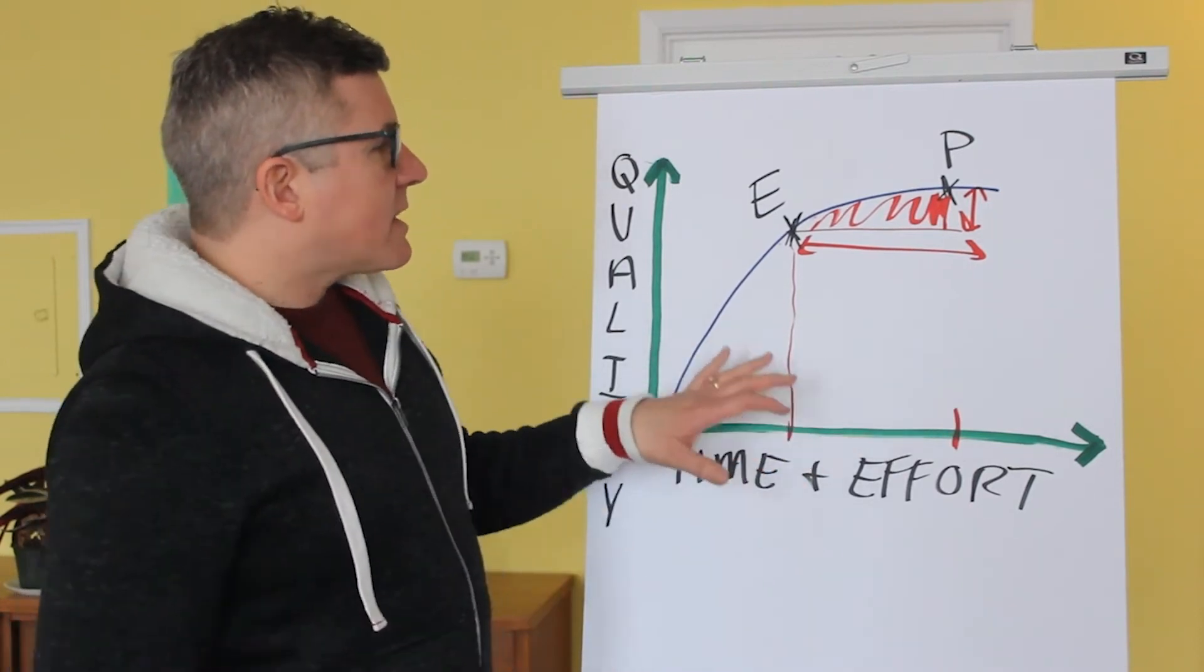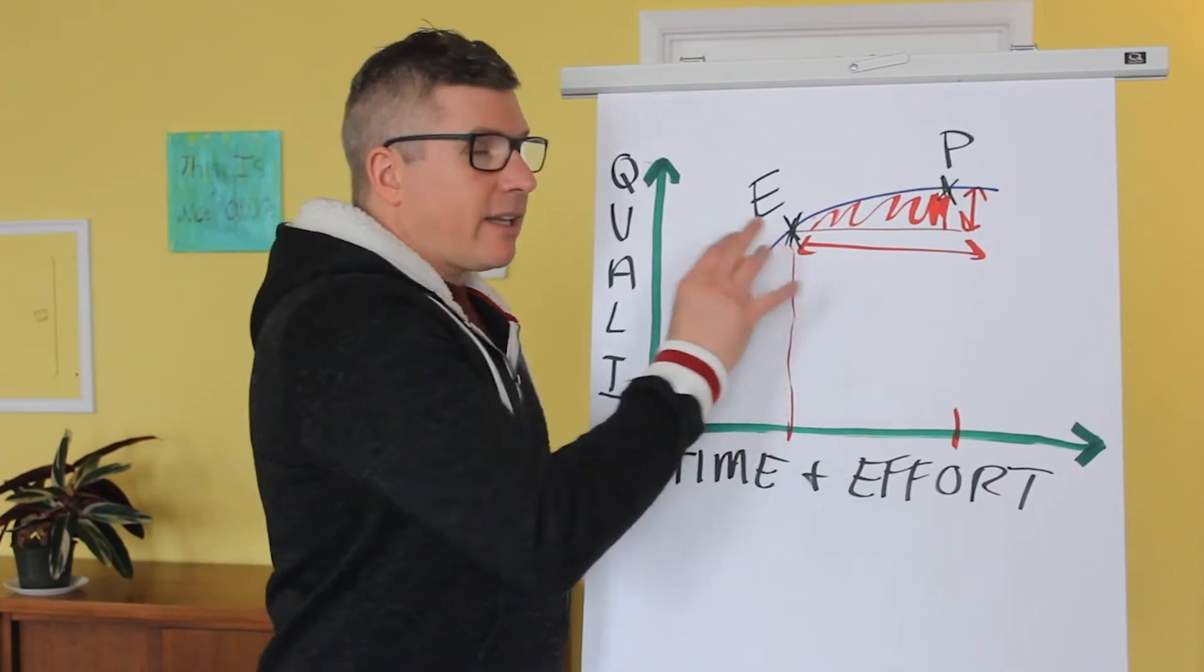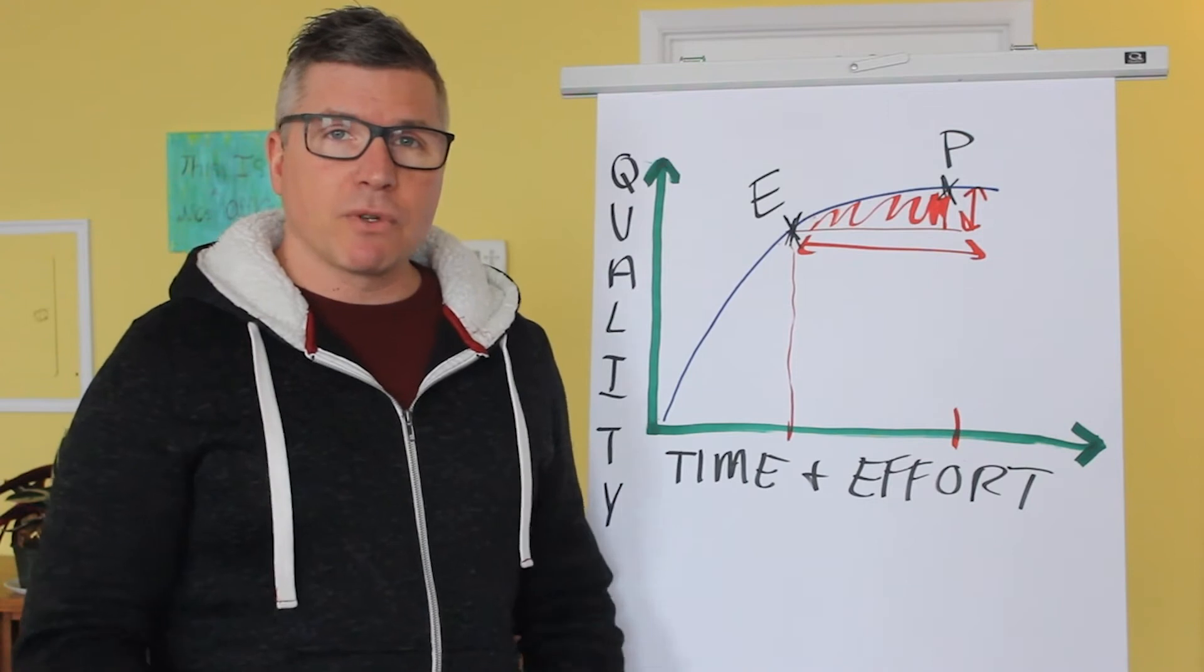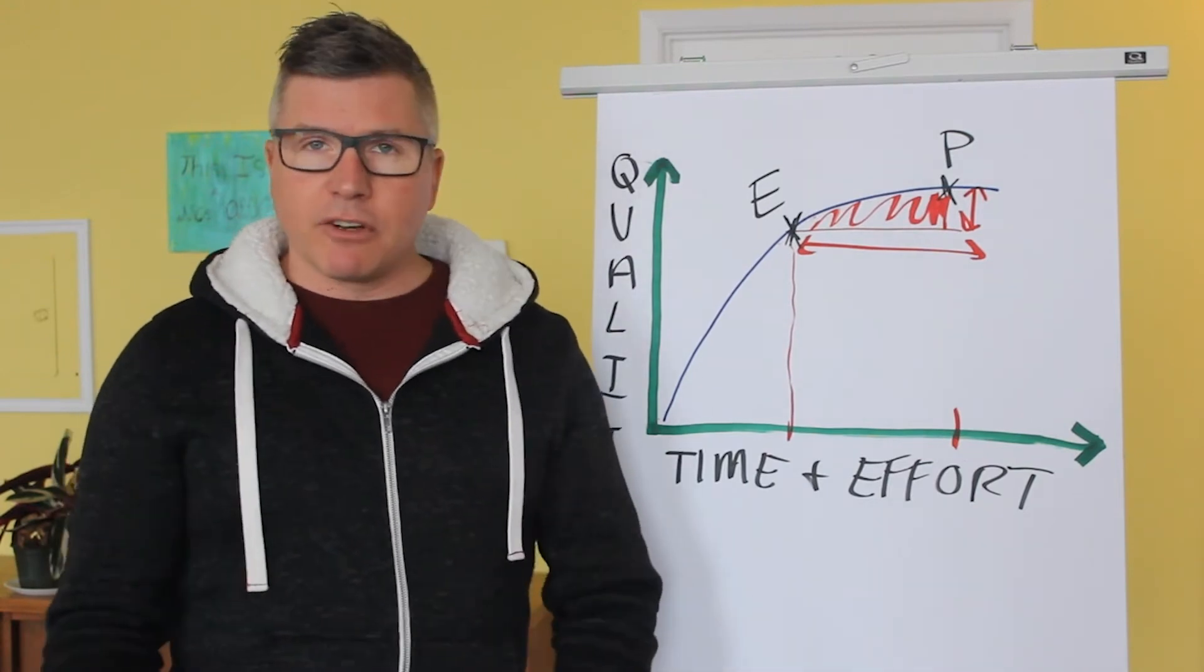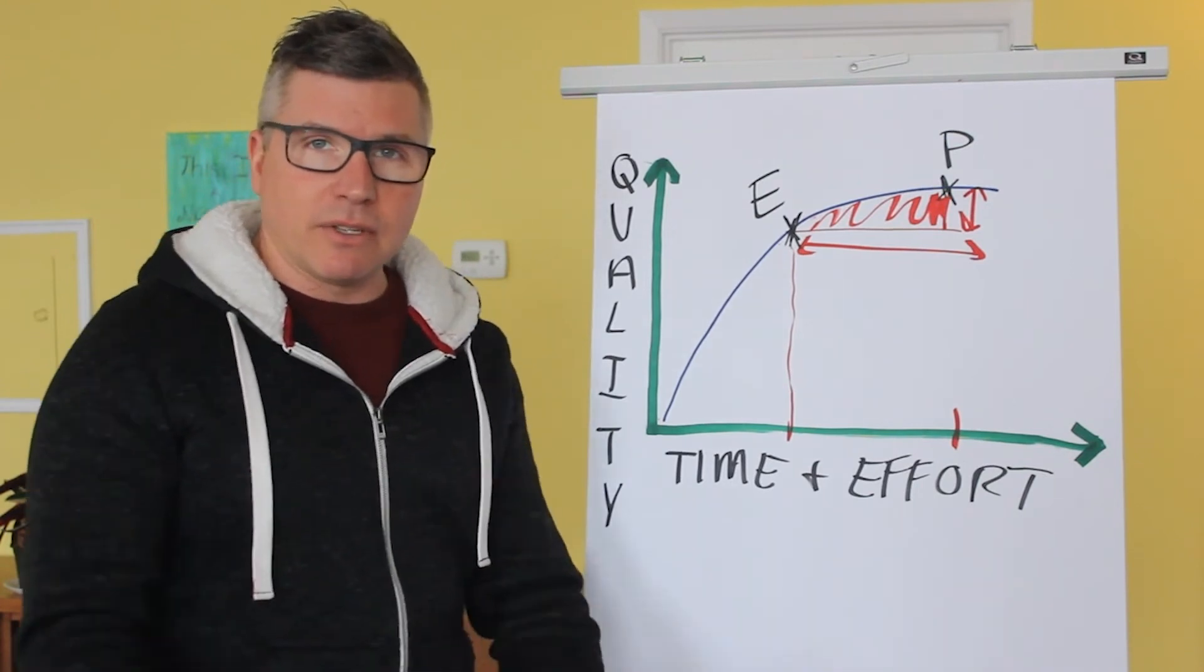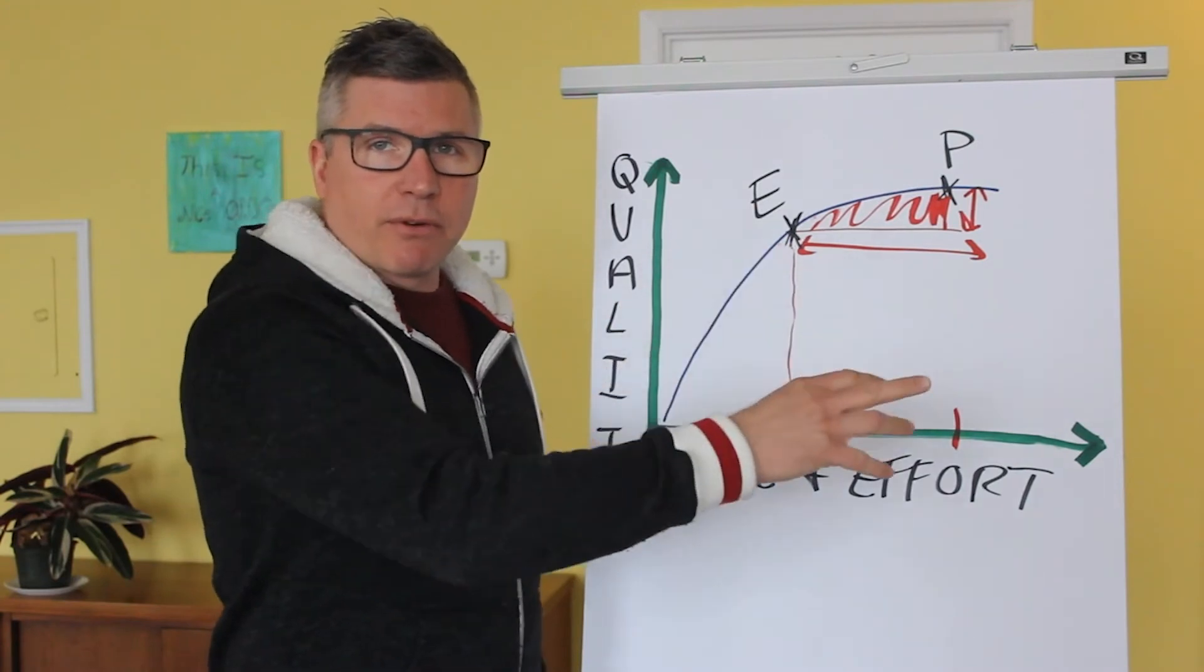The other thing that I see with business owners particularly, going for perfection and not settling for excellence, is that when they're delegating, they're expecting perfection from those whom they delegate to. And inevitably the people that they're asking to do things can't hit perfection because they can't even do it, let alone someone who's being trained on something. And then the business owner ends up taking the item back and trying to continue on with perfection.